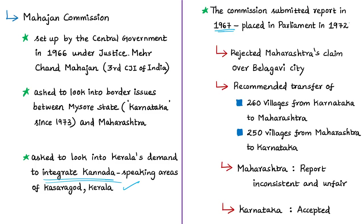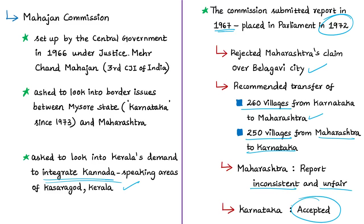The commission submitted its report to the Union Government in 1967, and it was placed in Parliament in 1972. The commission rejected Maharashtra's claim over Belagavi city but recommended transfer of about 260 villages from Karnataka to Maharashtra and about 250 villages from Maharashtra to Karnataka. Maharashtra said the report was inconsistent and did not agree to certain aspects, while Karnataka accepted it as supportive of its claim. Karnataka's present Chief Minister has recently reiterated that the Mahajan Commission report is final.